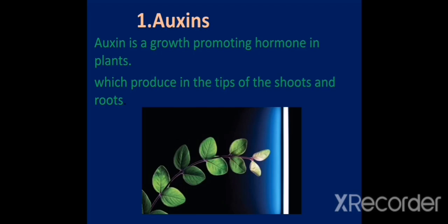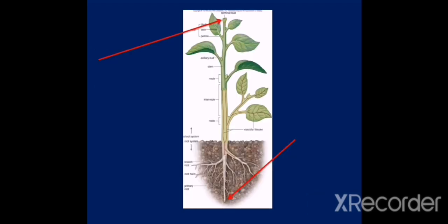So let's talk about auxins. Auxin is a growth promoting hormone in plants. It is produced in the tips of shoots and plant roots. Here you can see, in red arrows, I am showing you the shoot apex and the root apex, tip of the shoot and the tip of the root.